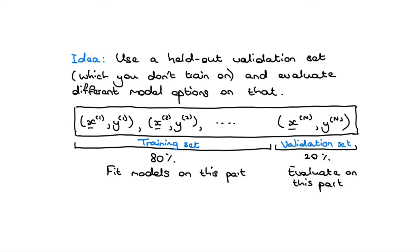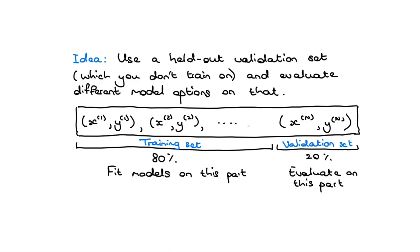Now you can start making better conclusions about which model is better. For example, you can set your regularization parameter by trying a few different lambdas — train a model with one lambda, evaluate it on the validation set, try a different lambda, evaluate again, and pick the best lambda. Then you want to tell your client: if you run this model on real data, you can expect this accuracy or this mean squared error.